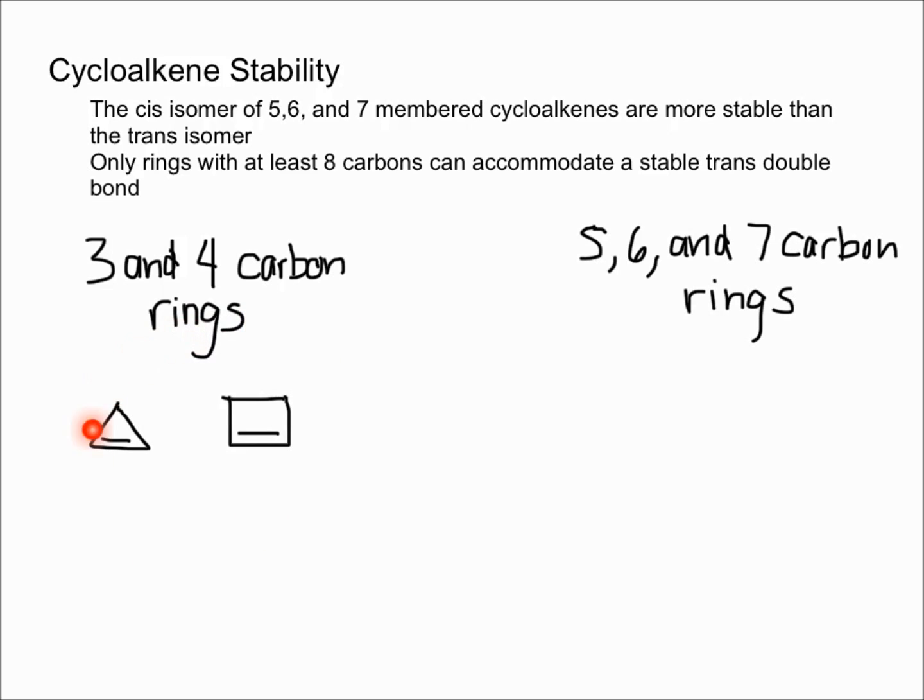As you can see down here, the three and four carbon rings that I've drawn look a little funny and they're really unstable due to a lot of angle strain. As a result, you're rarely ever going to see three or four carbon rings - they're going to be really rare and unlikely to form.